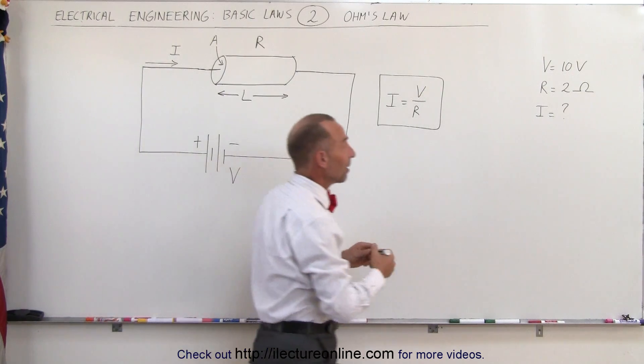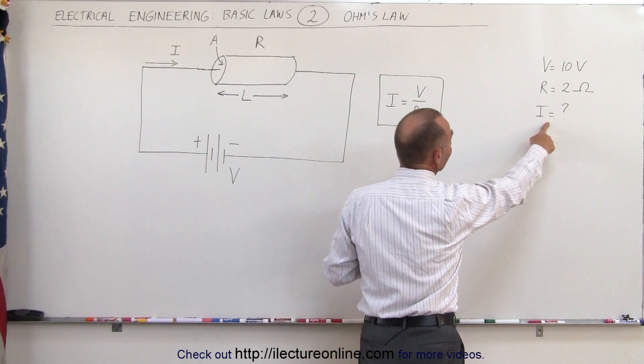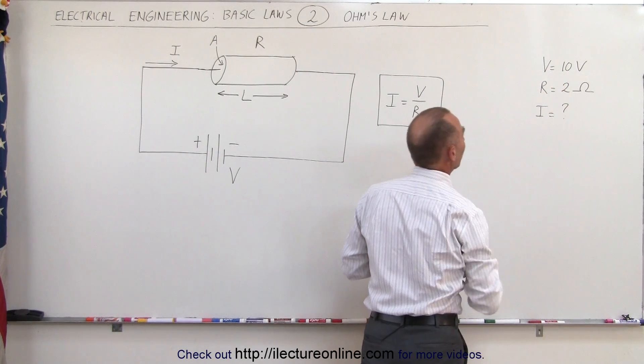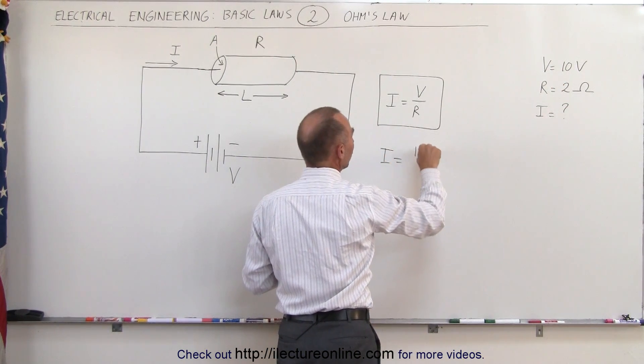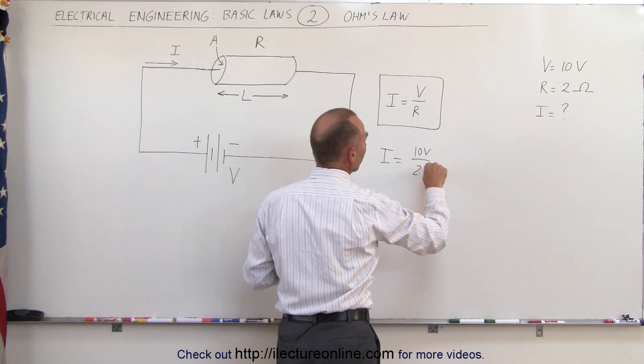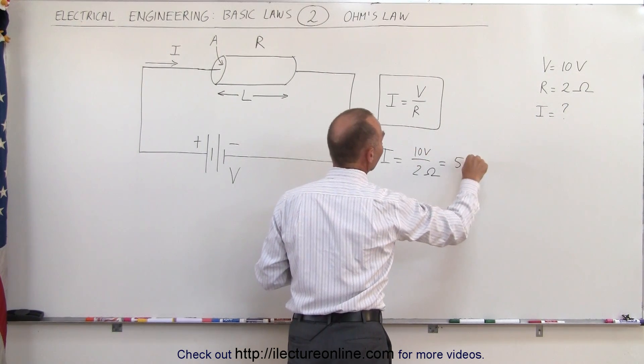A very simple example: if we want to find the current, if the voltage applied is 10 volts, the resistance is 2 ohms, we can say that I equals 10 volts divided by 2 ohms, that is equal to 5 amps.